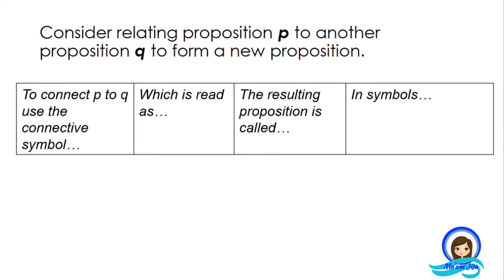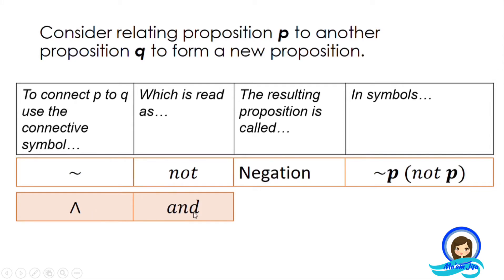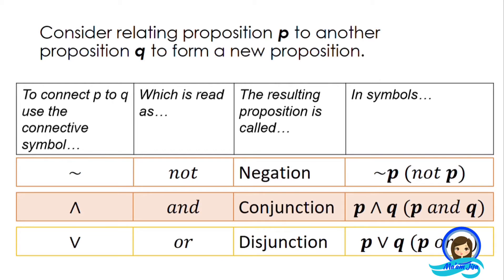To connect P to Q, we use connective symbols. The first symbol is read as 'not' — the resulting proposition is called negation, written as 'not P.' The next symbol is read as 'and' — the resulting proposition is called conjunction, written as 'P and Q.' Then we have 'or' — the resulting proposition is called disjunction, written as 'P or Q.' Don't be confused: for 'and,' the symbol points upward; for 'or,' it points downward.